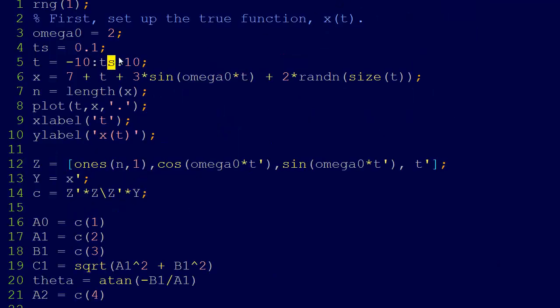Alright. So here we are. This is just seeding the random number generator. But then we set up the true function, x of t. And so we just pick an omega naught, and I just picked omega naught equals 2. So then we have a sampling frequency, or sampling time, ts. And then I'm just generating some data from negative 10 to 10. It's sampled out at 0.1.